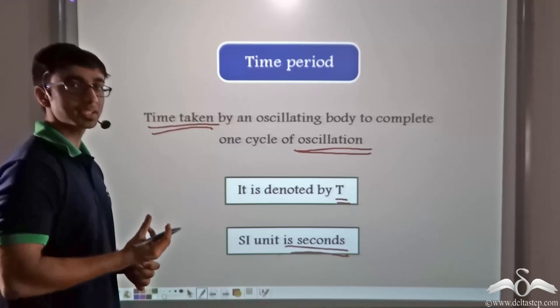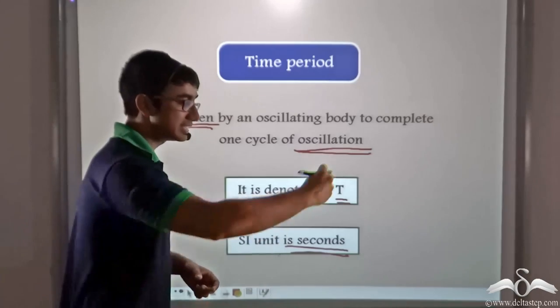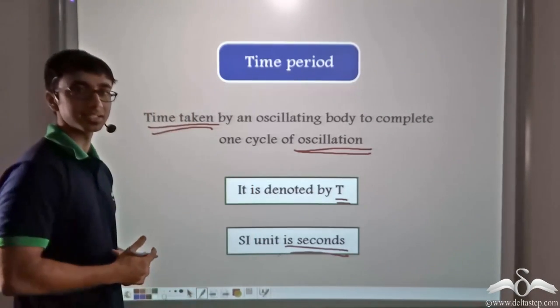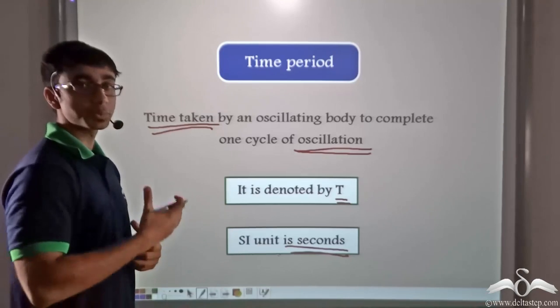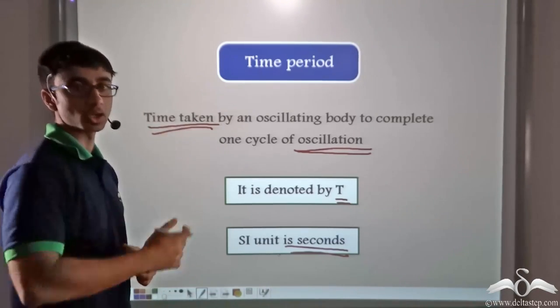If we have a pendulum having a time period of one second, it meant that it completed one oscillation or one full cycle in one second. Using this concept it was possible in those times to regulate the movement of a clock.